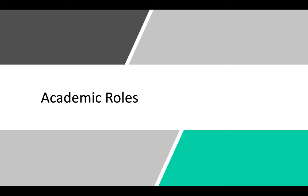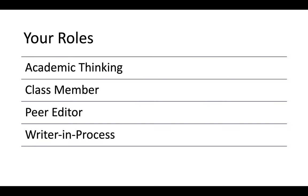If you put all of those things into practice, you will have a pretty good skill set for being successful in college. We're going to spend the last few minutes of today's lecture talking about different roles that you will probably play as an academic: academic thinker, class member, peer editor, and writer in process.